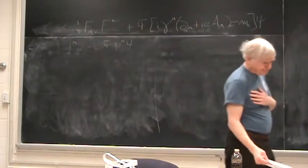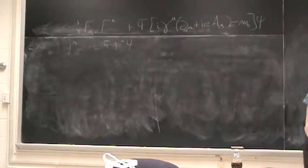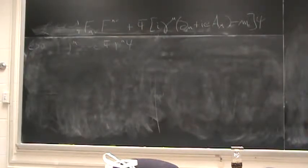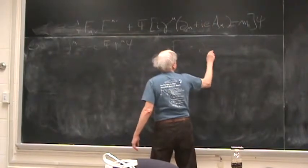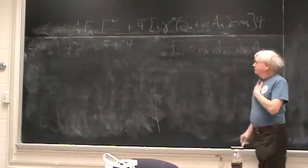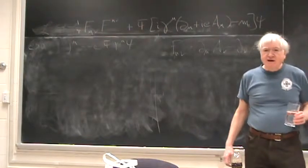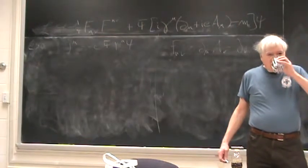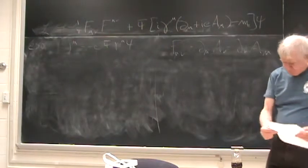Now, with F-mu-nu there is always potential for a sign error, so let me just remind you what the notation here is. F-mu-nu is d-mu A-nu minus d-nu A-mu. For pedagogical reasons we should avoid unnecessary use of Greek indices, but unfortunately I get sucked into it because it's just so universal.